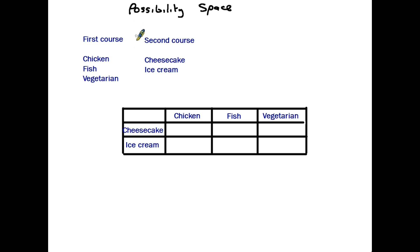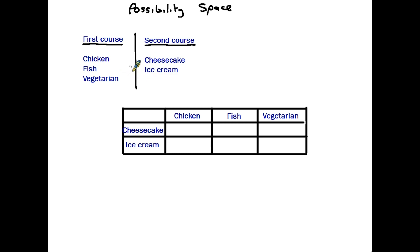Here's an example — I'm going to go through two or three different ones. We have a typical type of question: guests are having a meal and they have a choice of three different dishes for their first course and then two different ones for their second course. We want to look at all the possible combinations that guests could ask for.